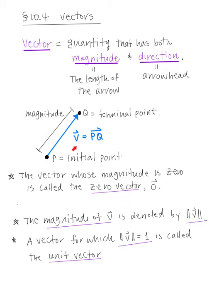The usual notation for a vector is a little bar on top of a letter. This is called the vector V equals PQ with vector notation. The vector whose magnitude is zero is called a zero vector, denoted by zero with a vector notation on top. The magnitude of V is denoted by a double absolute value sign with vector V inside — that stands for the magnitude or length of the vector.